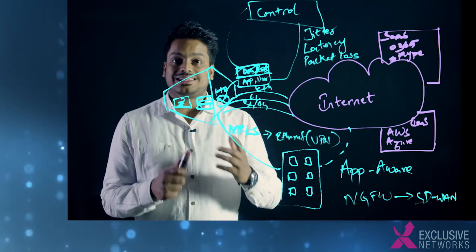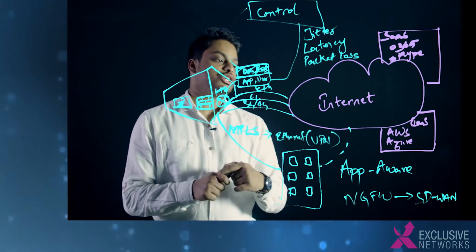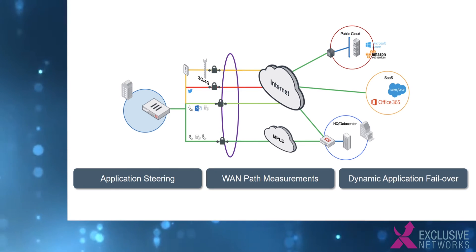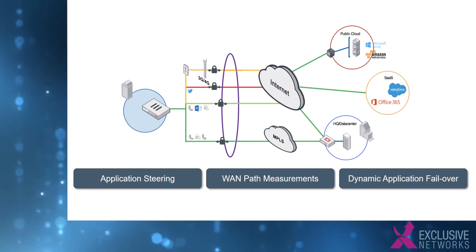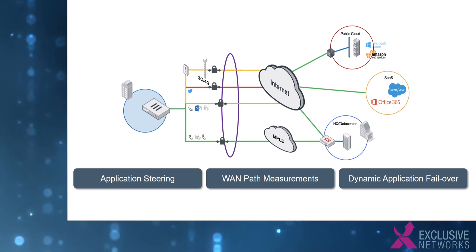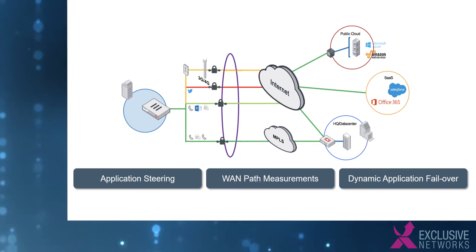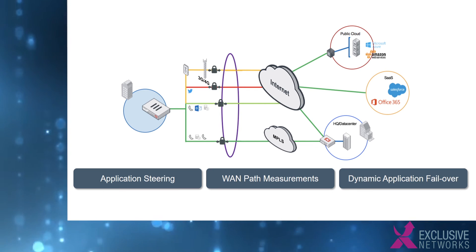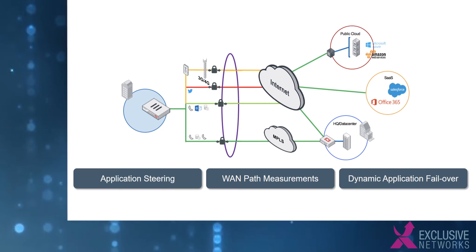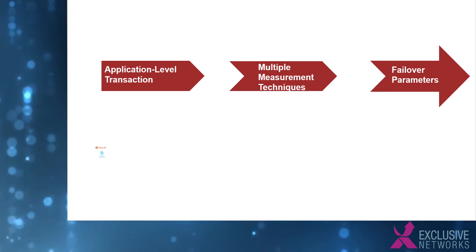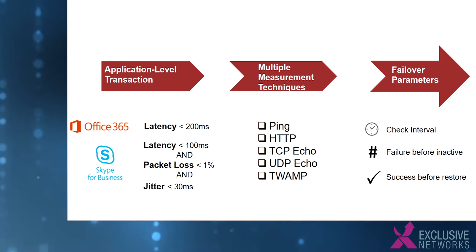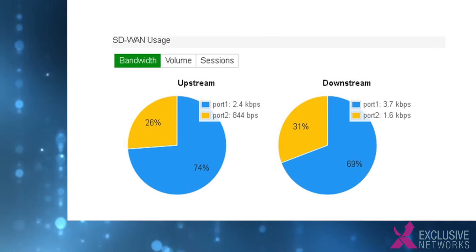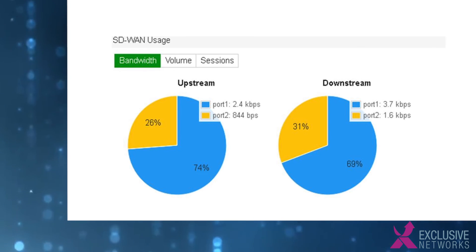Now, with the FortiGate SD-WAN solution, it is application-aware with over 3,000 applications. Using application steering, you can ensure that business-critical applications such as Office 365 and Skype always go through the preferred link. Granular transaction SLA criteria — such as jitter, packet loss, and latency — can be specified for each application, so that in the event of an SLA breach, there is a dynamic failover to the next best link. You can also configure bandwidth management to guarantee or limit the bandwidth given to high and low-priority applications, respectively.